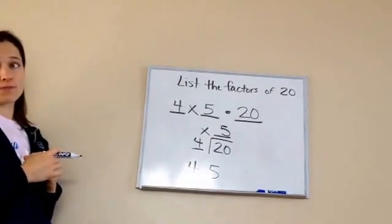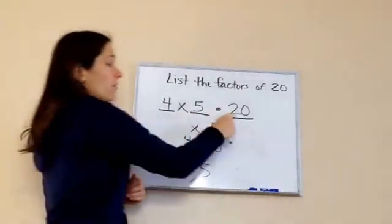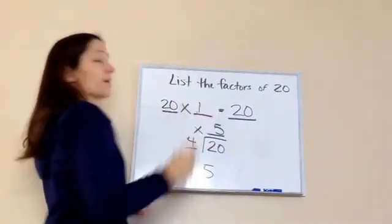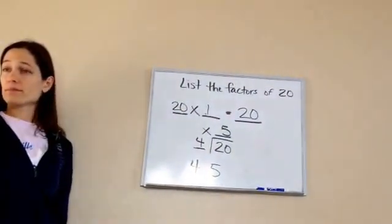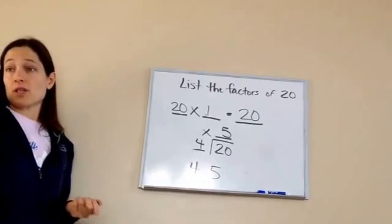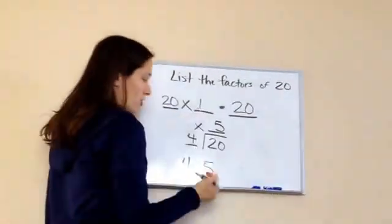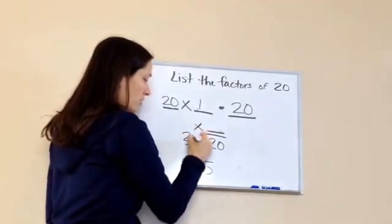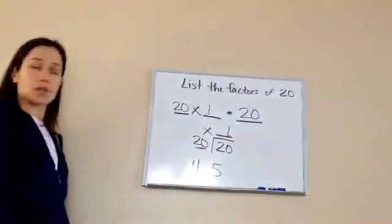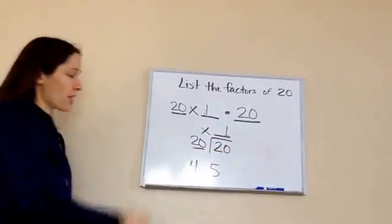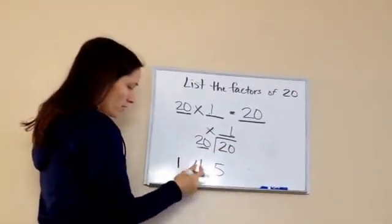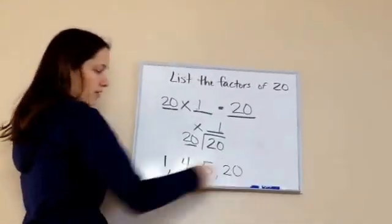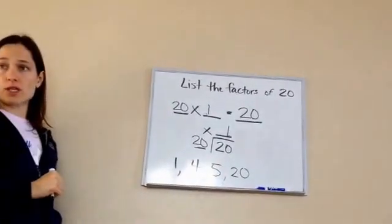Guess what else is always a factor? The number, the number itself and one. Because 20 times one is 20. So it would basically look like this: 20 goes into 20 one time. 20 times one equals 20, right? So so far we've got one, four, five, and 20. I'm just putting them in order from one to 20.